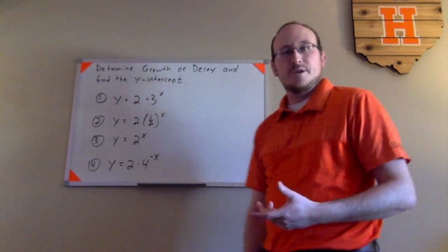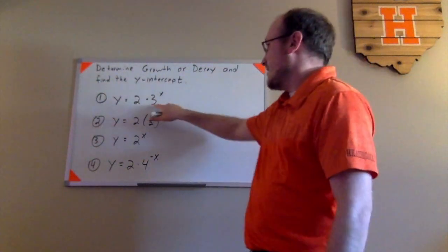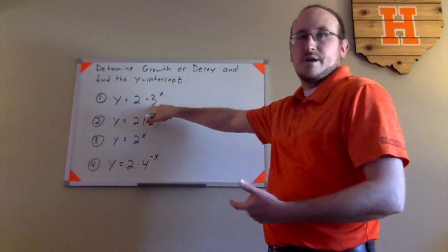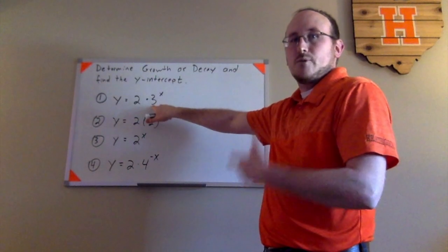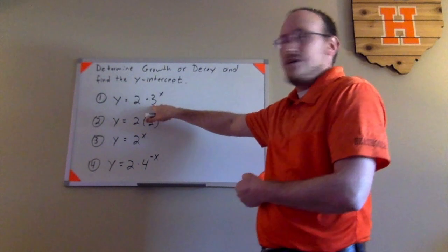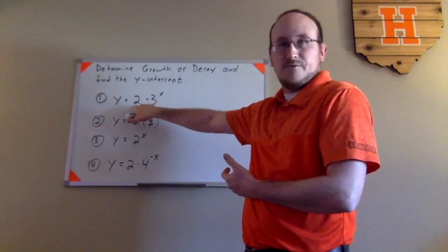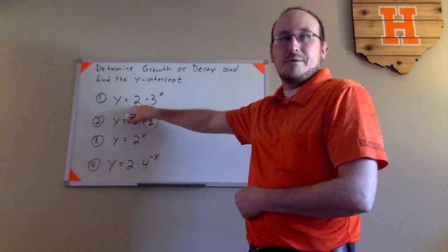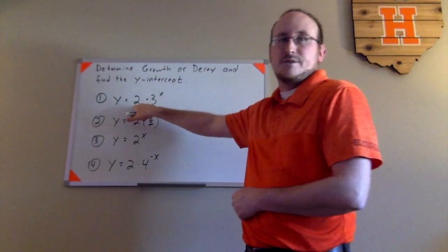So to determine if it was growth or decay, we would be looking at the value of b. In this case, that's 3. Since 3 is something greater than 1, this definitely would represent exponential growth. And then for the y-intercept, this initial value of 2 is where I would expect to see this graph crossing the y-axis at 2.